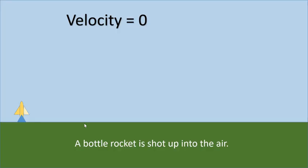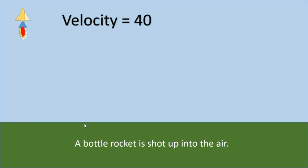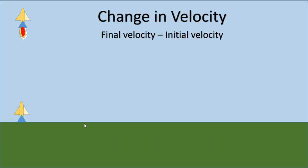Let's look at an example of speeding up. Here's a rocket being shot into the air. When it goes up, its velocity is 40 — let's say 40 meters per second. To put a number to the change, we take the final velocity after the event minus the velocity before. The final velocity was 40 meters per second, minus the initial velocity which was zero. Subtracting those two numbers, the change in velocity was 40.